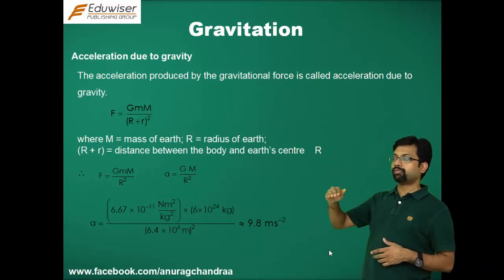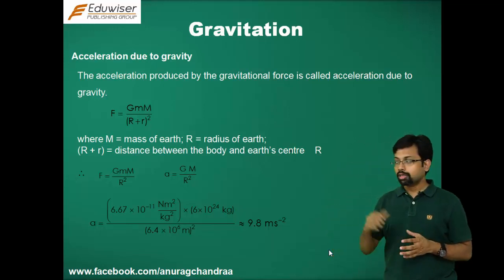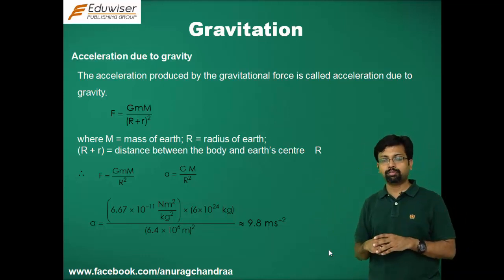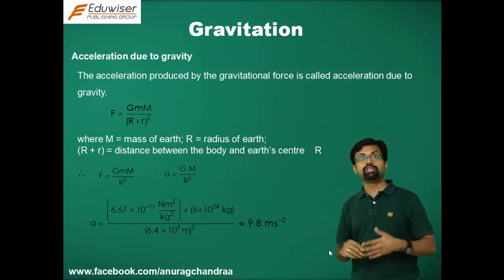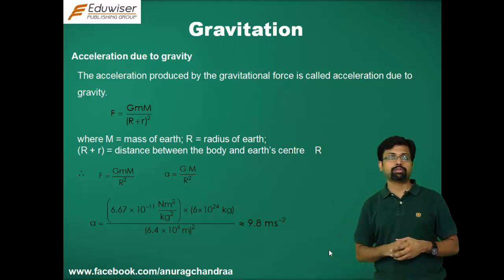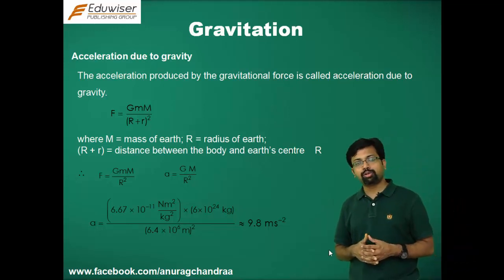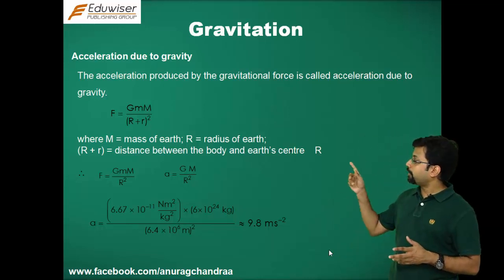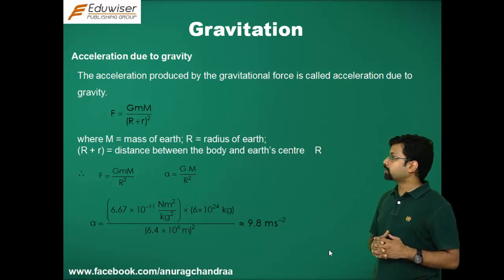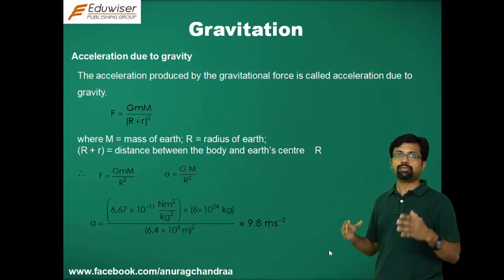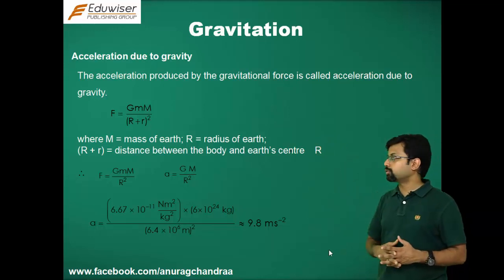If you take the body to a height small compared to the earth's radius of 6400 km — say 500 or 600 meters — then r is negligible compared to R. So (R + r) can be approximated as R, and the formula becomes F = GmM / R². Here G, M, and R are all constants for any body falling near the earth's surface.